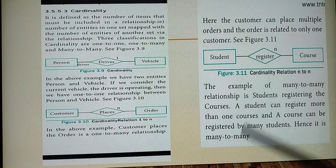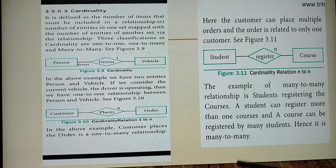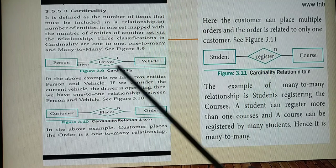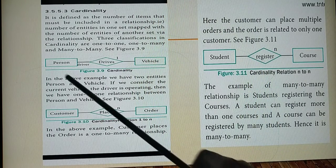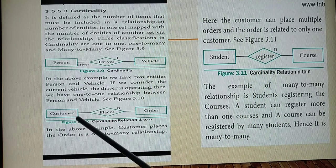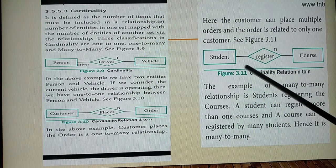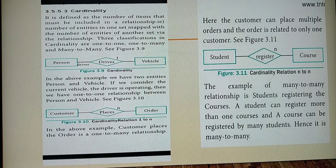Cardinality defines the number of items used in a relationship - here it is 1, N, and N respectively for the three types. Cardinality has three classifications: one-to-one, one-to-many, and many-to-many. Cardinality alone will be asked for a three-mark question.